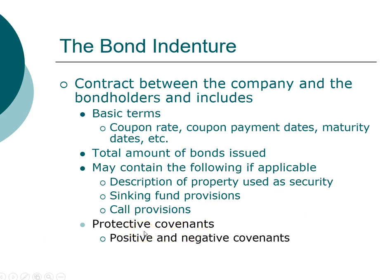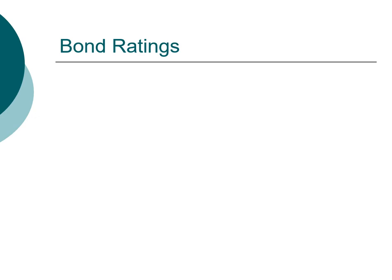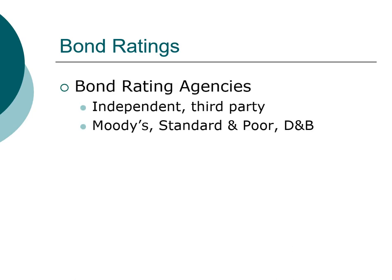Covenants are protective covenants designed to protect investors. There are positive covenants and negative covenants. Positive covenants are things the company must do — for example, the company must maintain a times interest earned ratio of a certain percentage. Negative covenants are things the company must not do — for example, the company must not pay dividends until it has paid off all interest obligations.